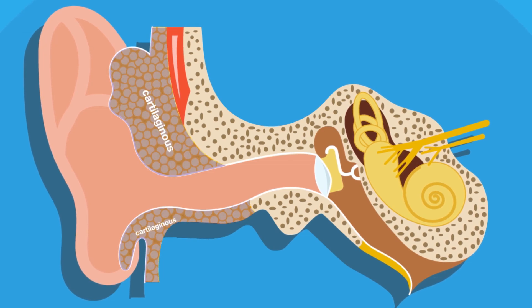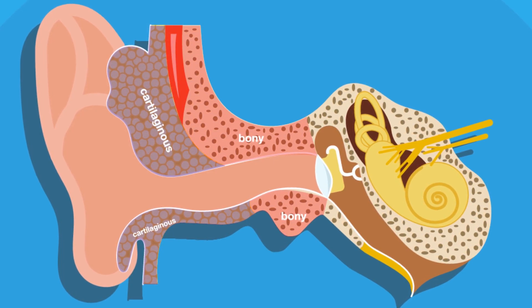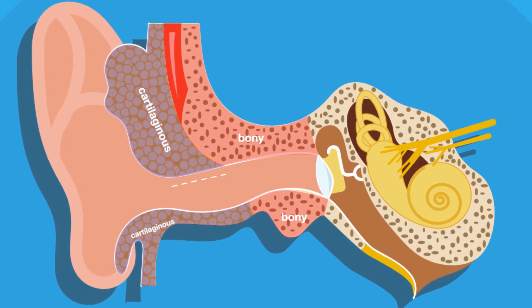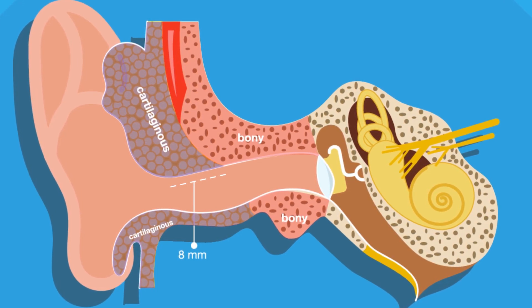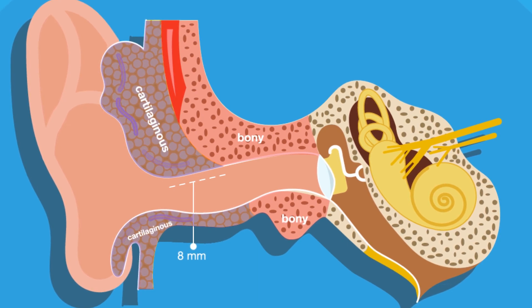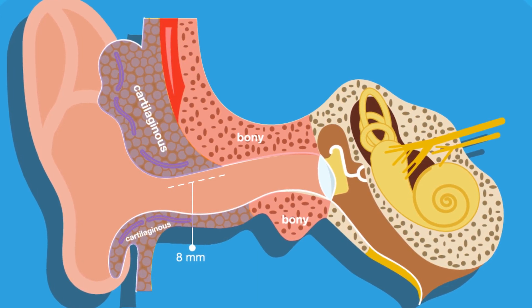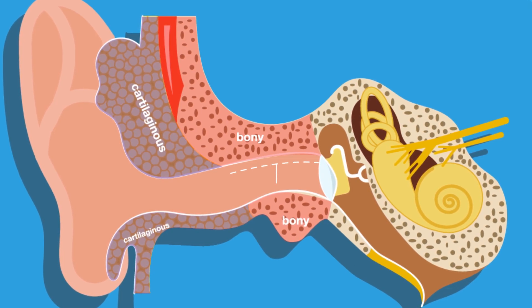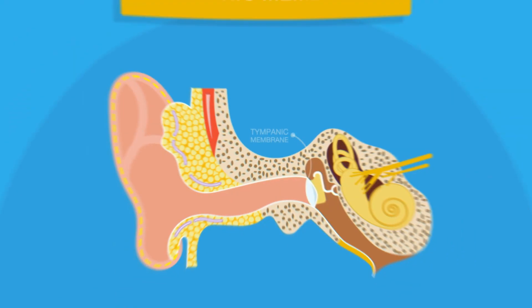The canal is divided into two parts: A. Cartilaginous part, which forms the outer one-third, measuring 8 mm of the canal. The cartilage is a continuation of the cartilage which forms the framework of the pinna. B. Bony part, which forms the inner two-thirds, measuring 16 mm.